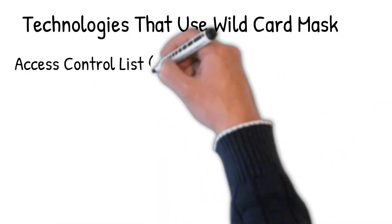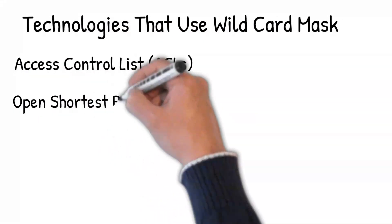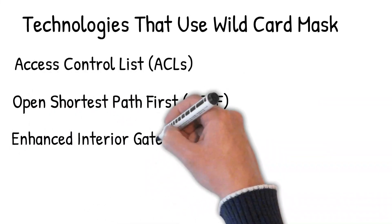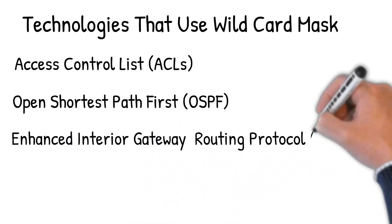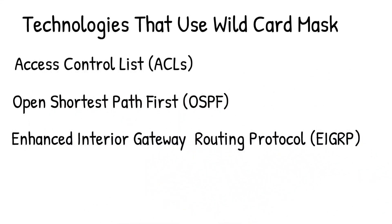You want to understand wildcard masks because certain technologies use them instead of subnet masks. These include access control lists (ACLs), OSPF, and EIGRP. If you understand the concept of a wildcard mask, it will be easier to understand how to configure these technologies.